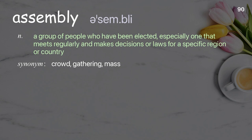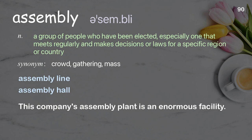Assembly: a group of people who have been elected, especially one that meets regularly and makes decisions or laws for a specific region or country. Examples: assembly line, assembly hall. This company's assembly plant is an enormous facility.